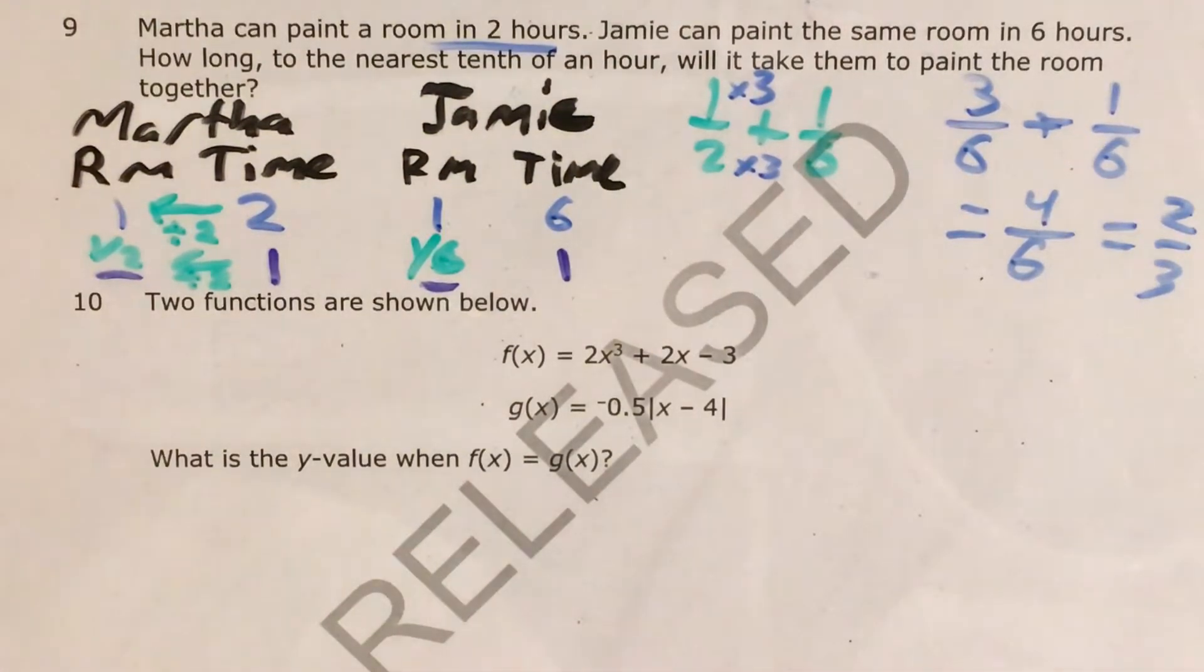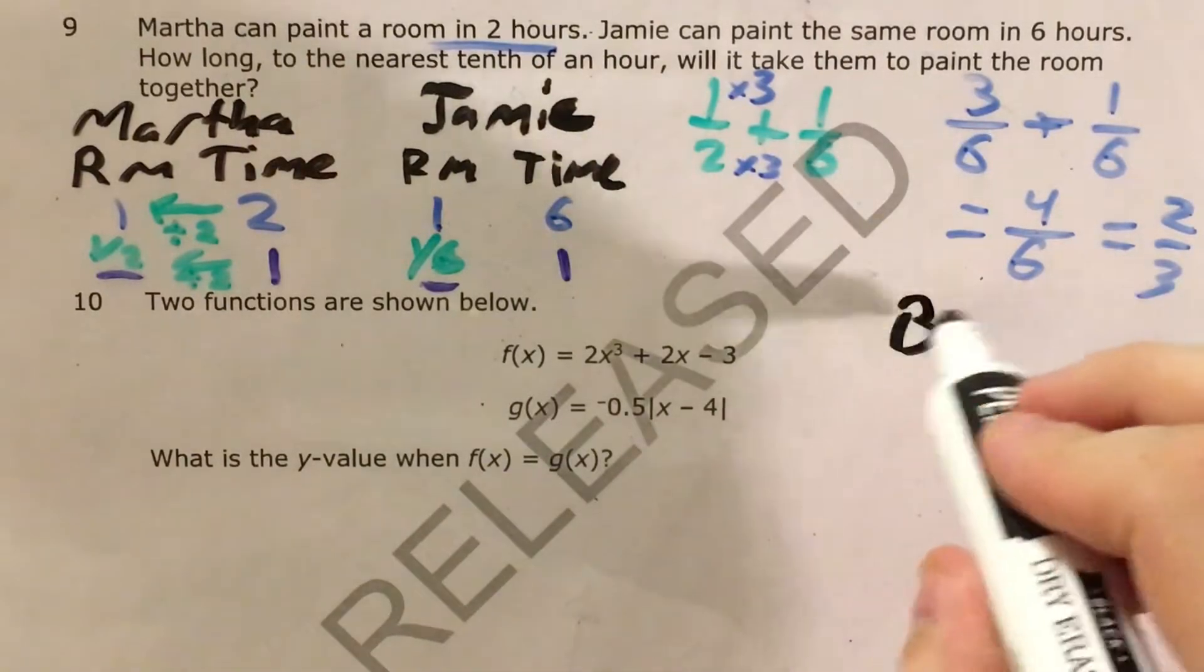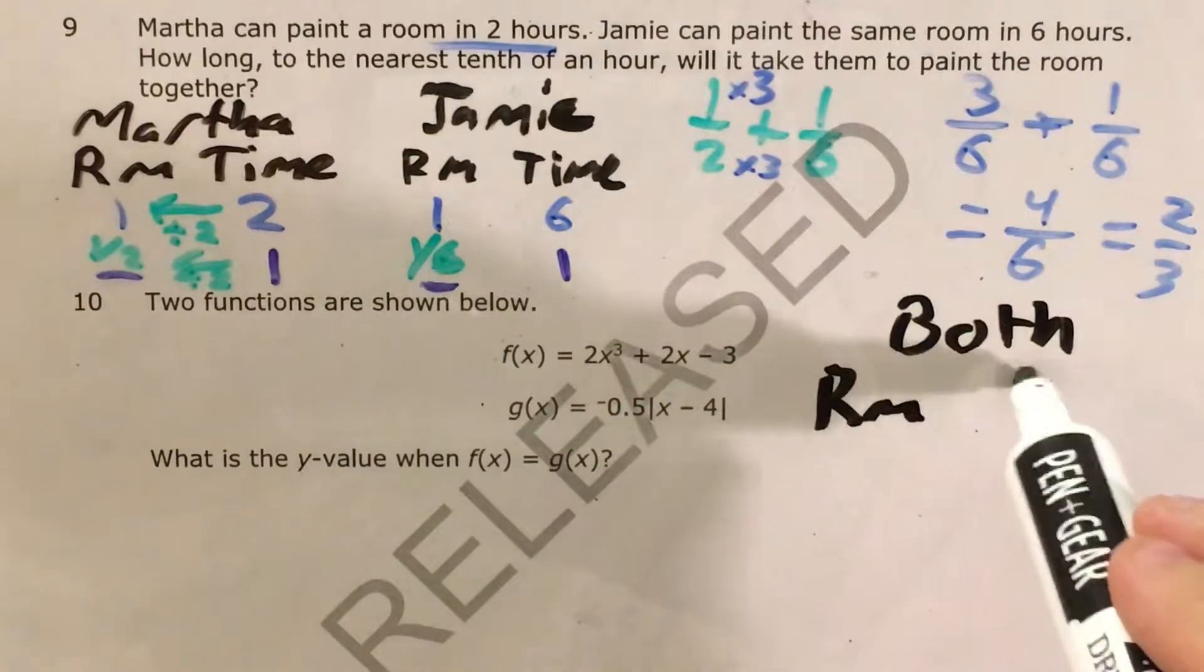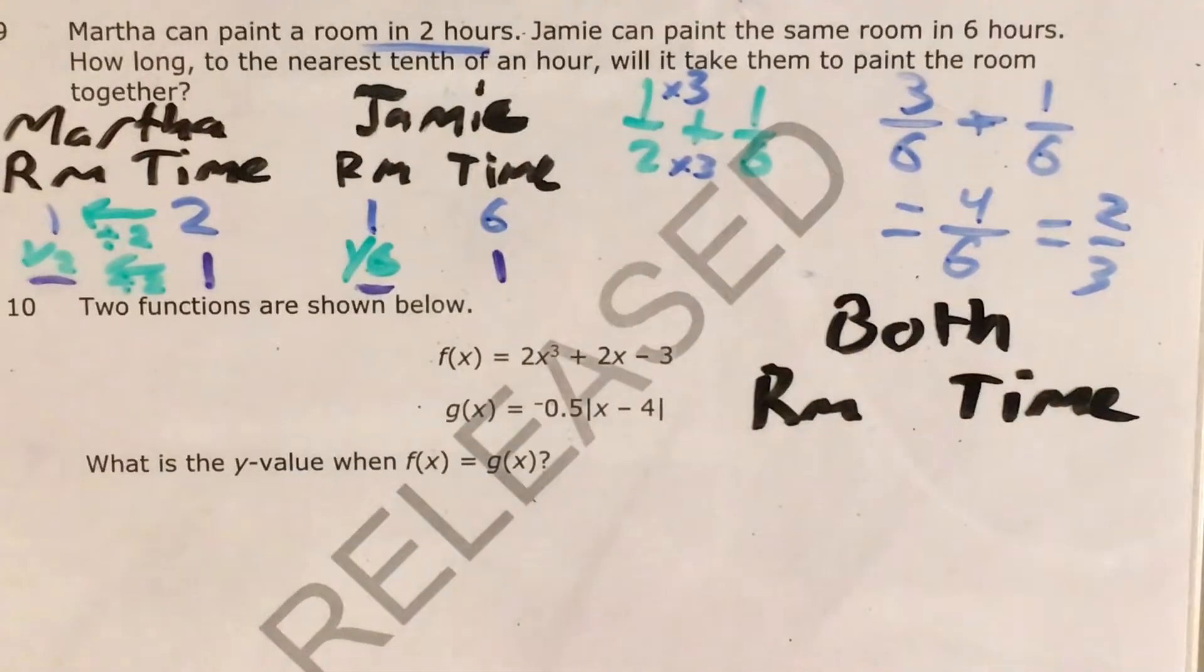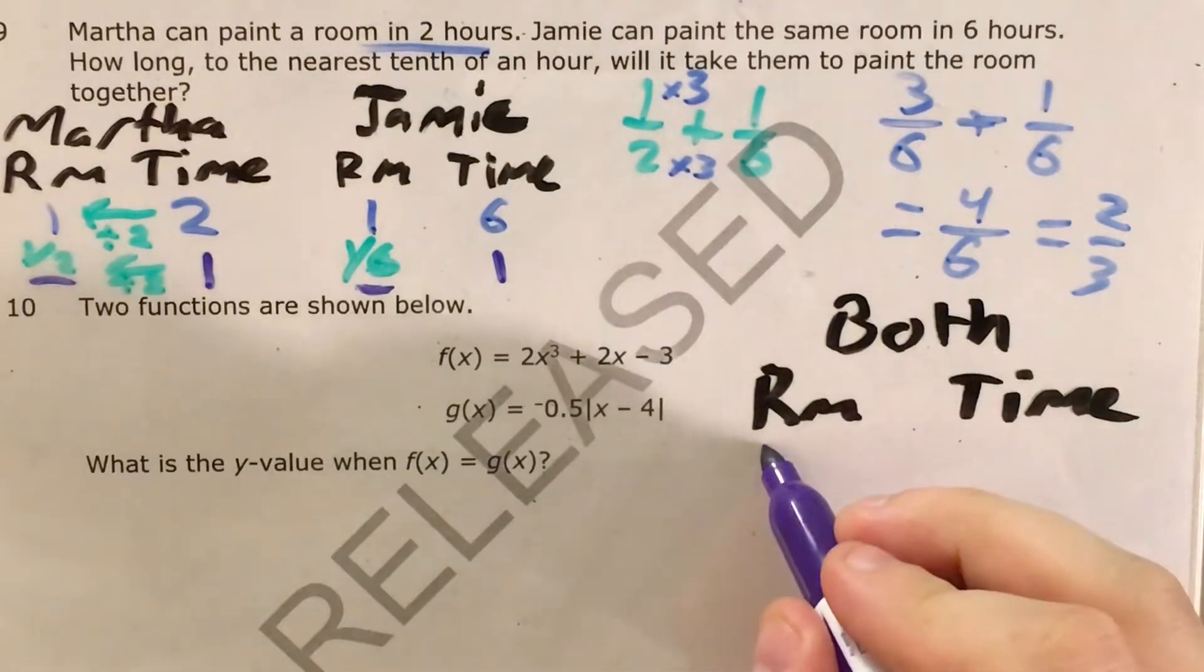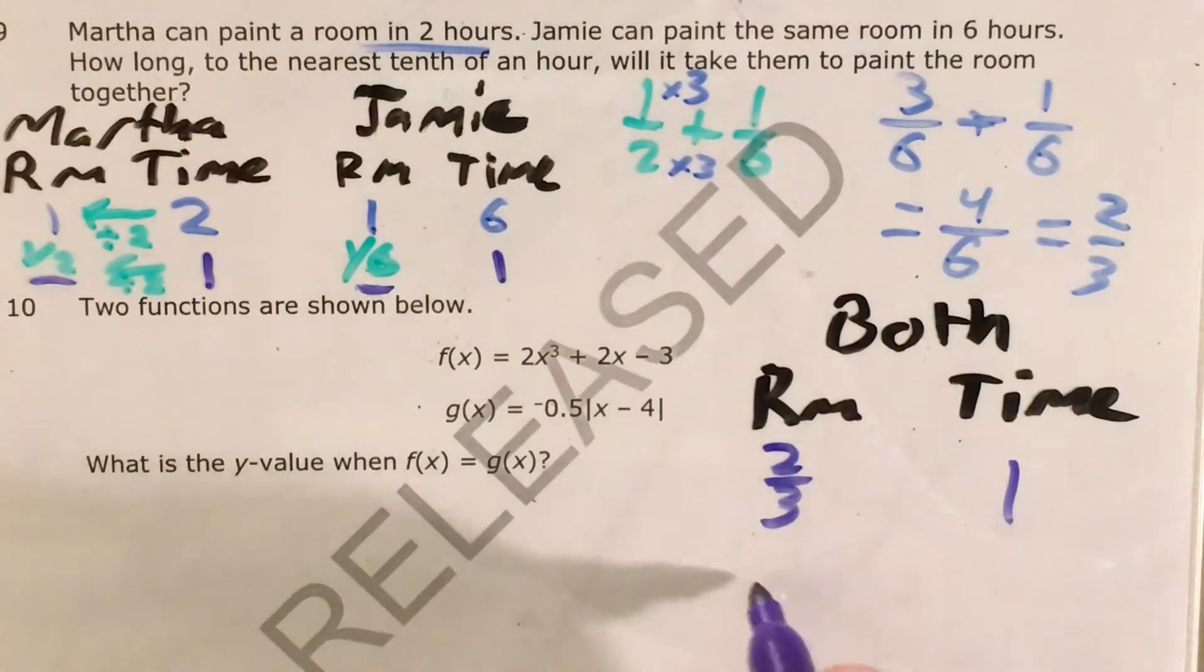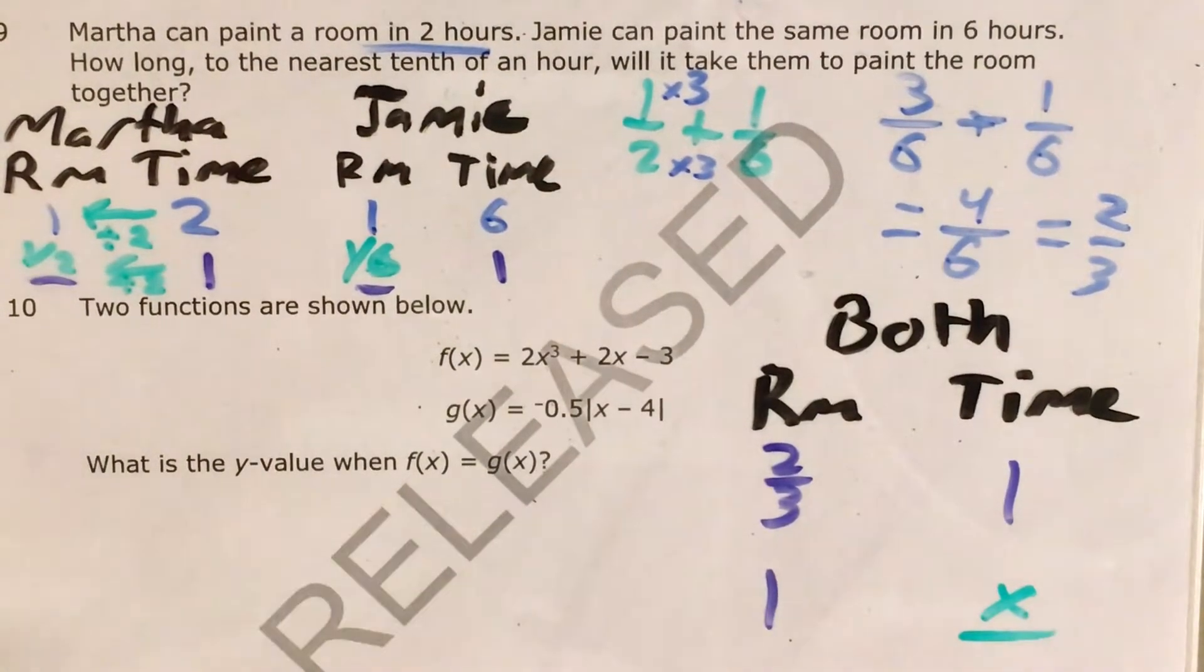And so I need one more number table and this one's for both of them. If I know that they can paint two thirds of the room in one hour I want to know how long it's going to take them to paint the whole room. And at this point I can set up a proportion with this being my x what I don't know.